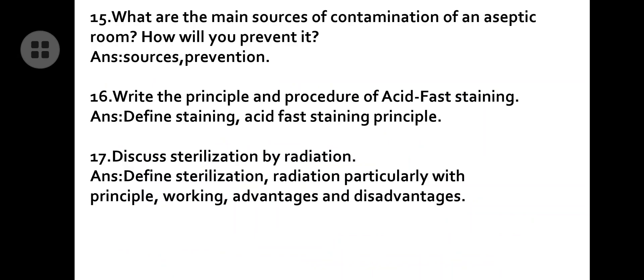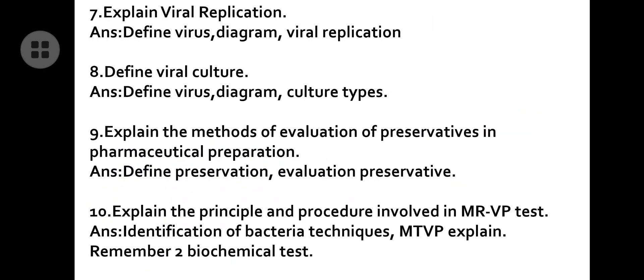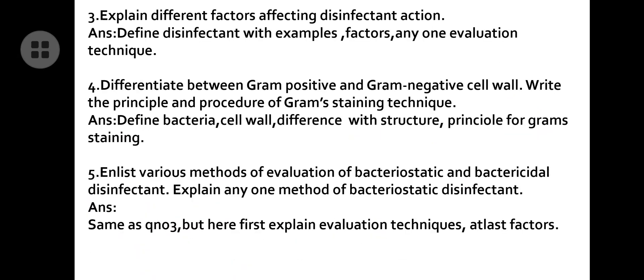Next question: what are the main sources of contamination of the aseptic room and how will you prevent it? Write the sources and the prevention methods — the best method is laminar airflow, which you can describe here. Also cover the principle and procedure of acid-fast staining: define staining, explain acid-fast staining principle and requirements. Then discuss sterilization by radiation: define sterilization and radiation, and write the principle, working, advantages, and disadvantages.